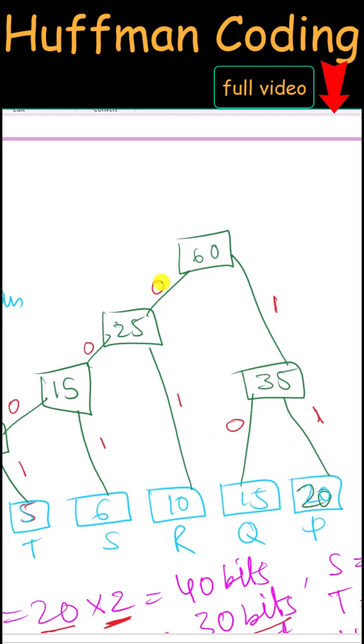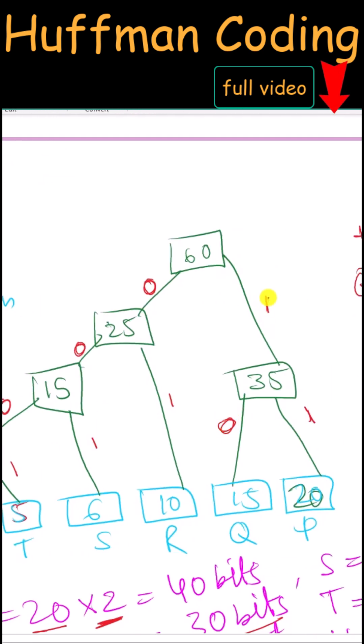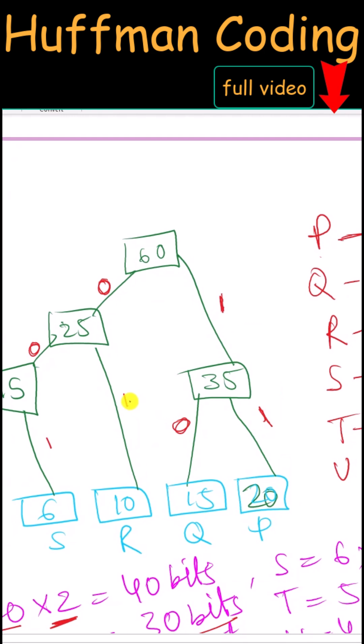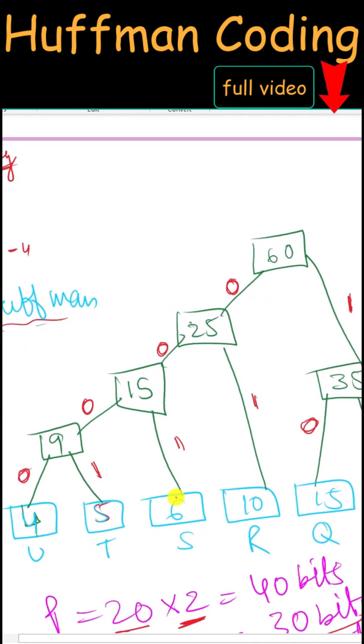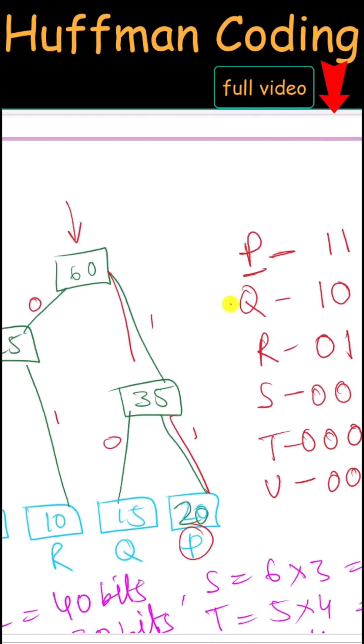Now in this tree we have to assign 0 to all of the left edges and 1 to all of the right edges of our tree. To represent any character, we have to start from the root and traverse towards that particular character. In case of character P, we are going to have the code 1 and then 1.